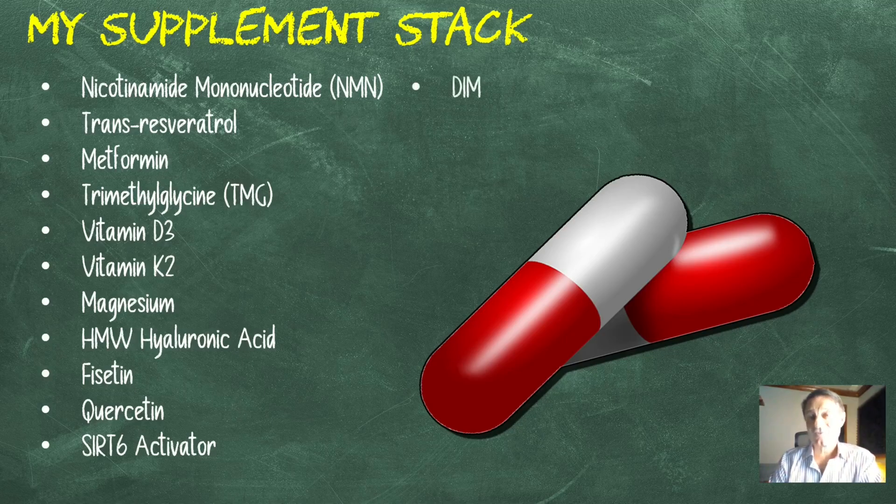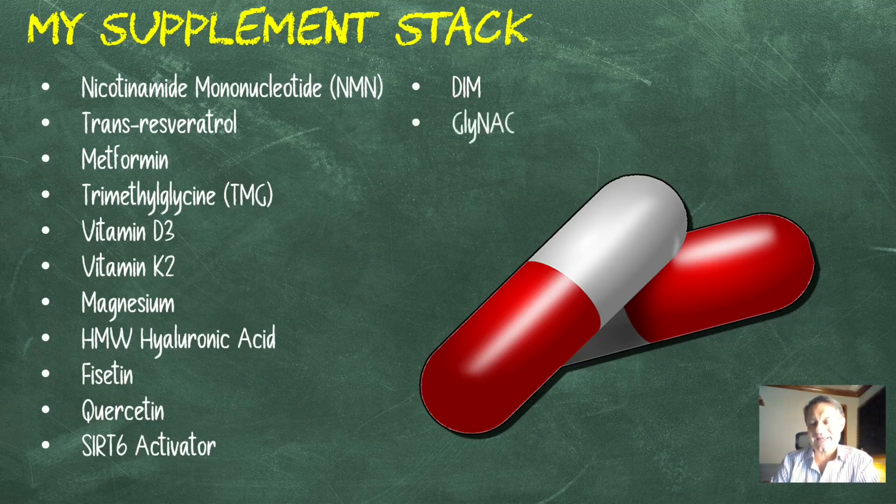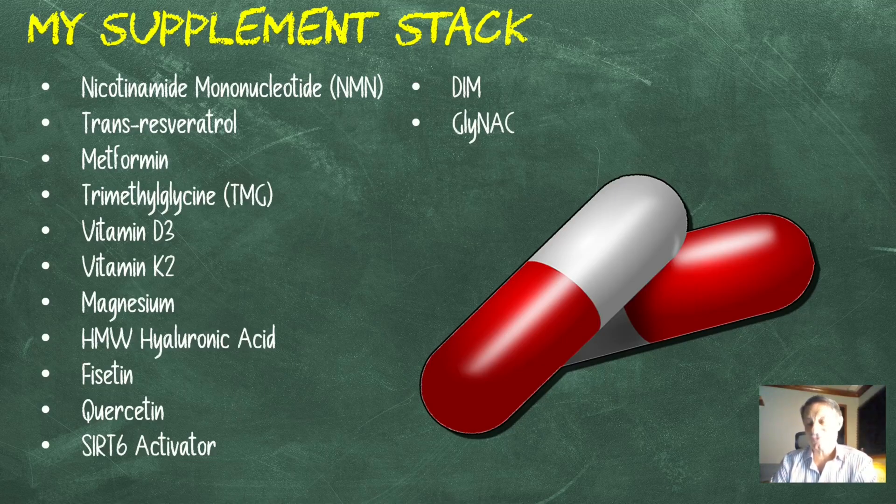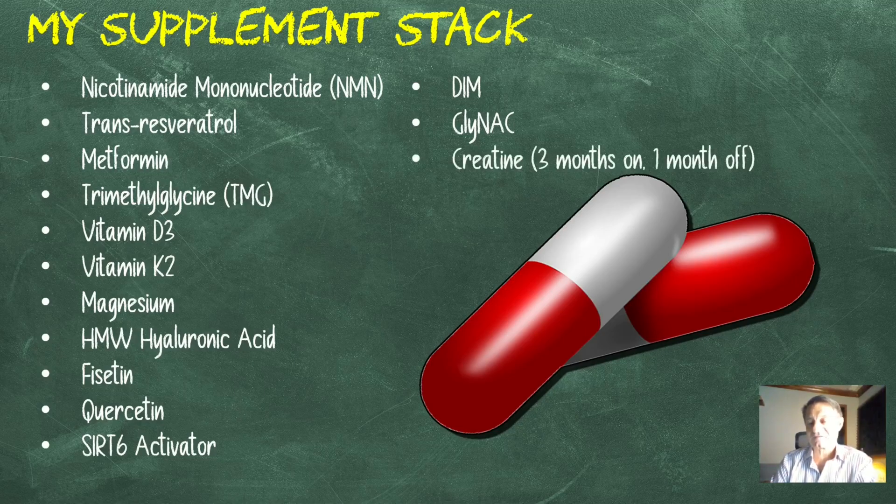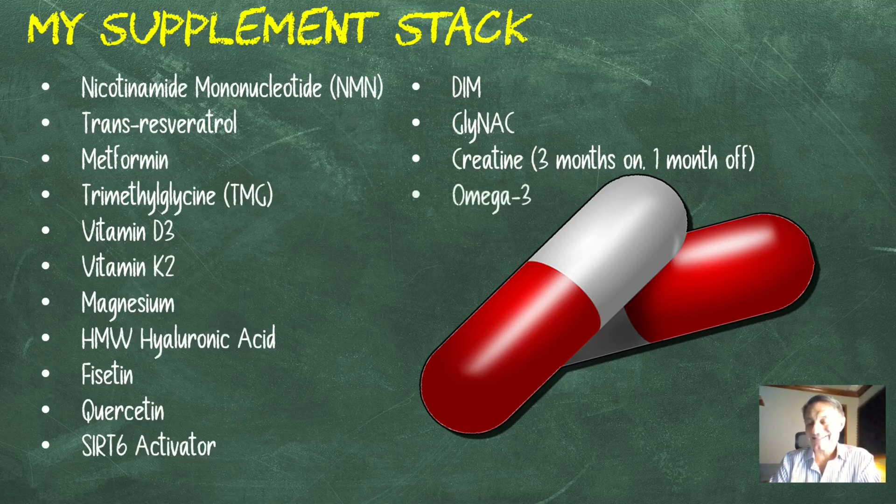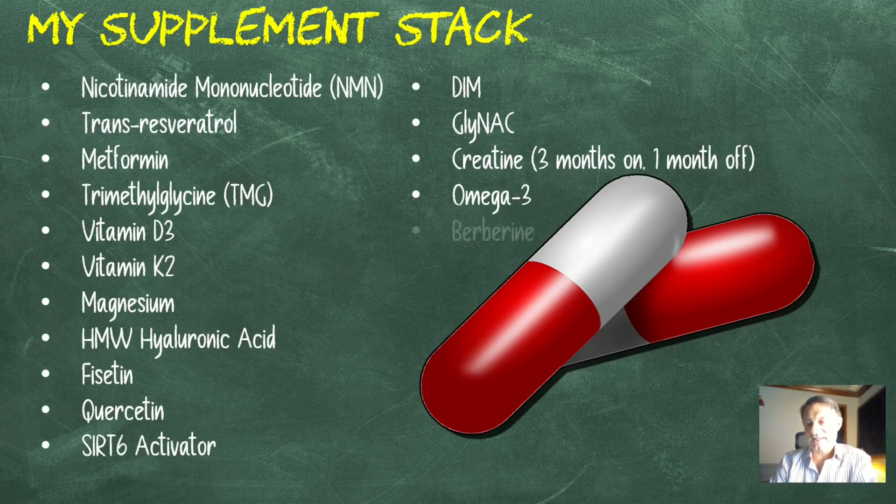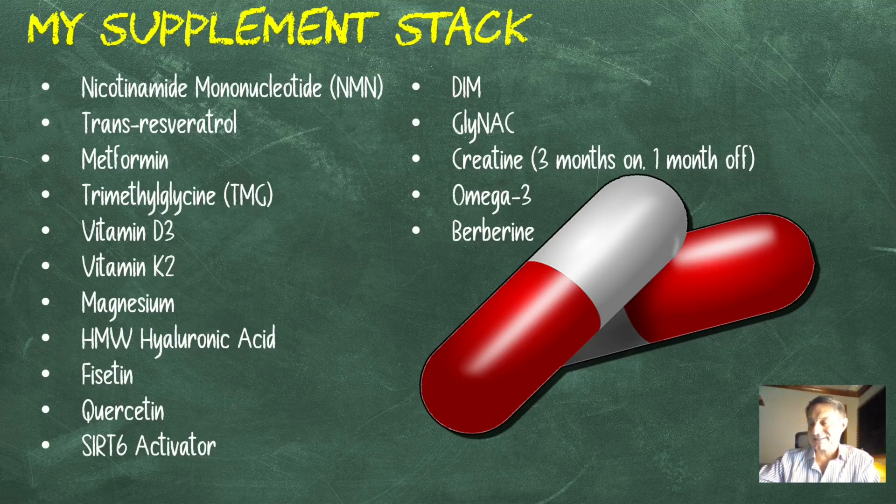DIM, 600 milligrams a day. GlyNAC - that's glycine and NAC, N-acetylcysteine - I'm taking 800 milligrams a day. Creatine, I do three months on and one month off, five grams per day. Omega-3, 800 milligrams of EPA and 600 milligrams of DHA. And then the last thing on the list is berberine, 500 milligrams a day.